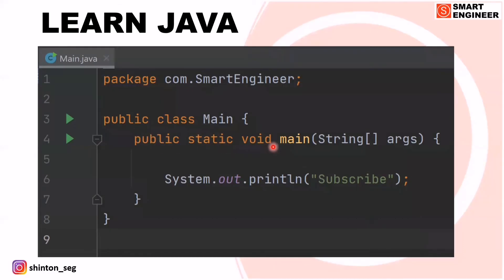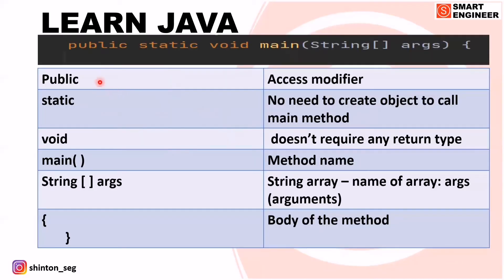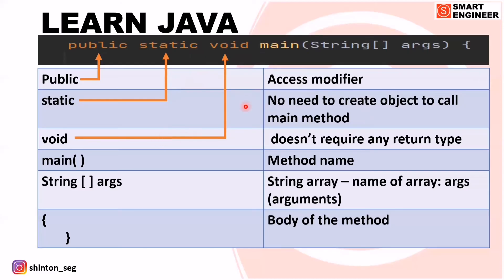First of all, I will tell you what is public. Public is an access modifier. Some other access modifiers are private, default, and protected. As you know, 'public transport' means everyone can access it — similarly, if we are making our main method as public, then we can access it from anywhere. Now, static — if you are making our main method as static, then we do not need to create an object to call our main method. We will discuss how to create an object in a later video. Now, void — void means we do not require any return type for our method.